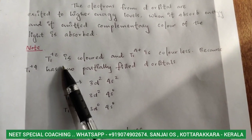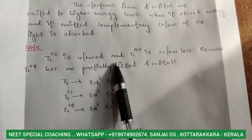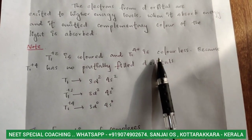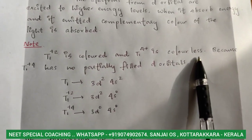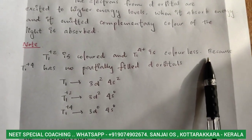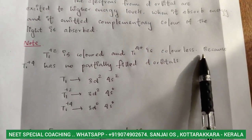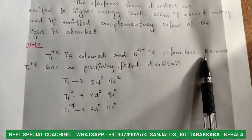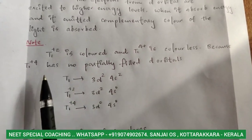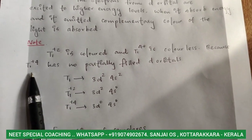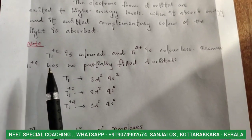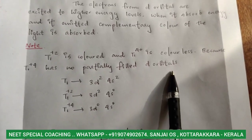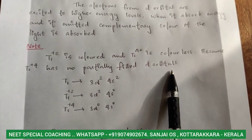Titanium 2+ is colored and titanium 4+ is colorless. This is because titanium 4+ has no partially filled d-orbitals, so no d-d electron transition is possible.